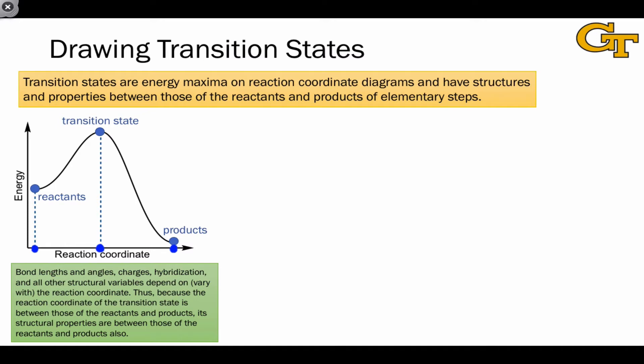Appreciating this idea is the key to drawing transition states. What we want to do when drawing a transition state is look at the reactants and products of the step, and then draw a structure that's intermediate between those reactants and products, focusing on these key structural variables.